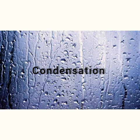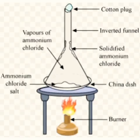Now comes sublimation. Sublimation is a process in which a solid directly changes into gaseous state on heating, and vice versa. A common example is camphor and ammonium chloride. In the experiment shown, ammonium chloride is kept under an inverted funnel closed with a cotton plug. On applying heat via a burner, the ammonium chloride salt evaporates and then solidifies on the sidewalls of the funnel — going directly from solid to gaseous state and back to solid. Another common example is dry ice, which is solid carbon dioxide.